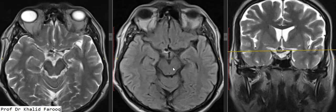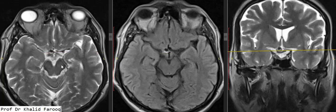Here we can see there is a tiny aneurysm which is just inferior and superior to the right side of the optic chiasm. Here we can see the optic chiasm is minimally compressed and displaced downward and posteriorly as well.